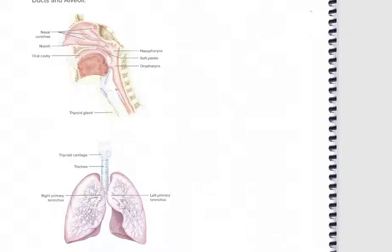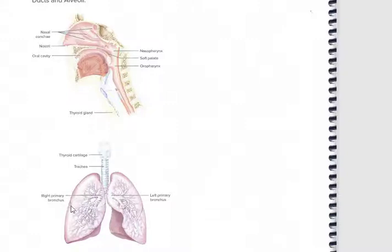Welcome to week 4 lab - we're going to be doing the respiratory system. Here's your right and left lung. You'll always know the left because it has this notch for the heart to stick into it. The right one has three lobes and the left only has two lobes, so that's a little giveaway there.